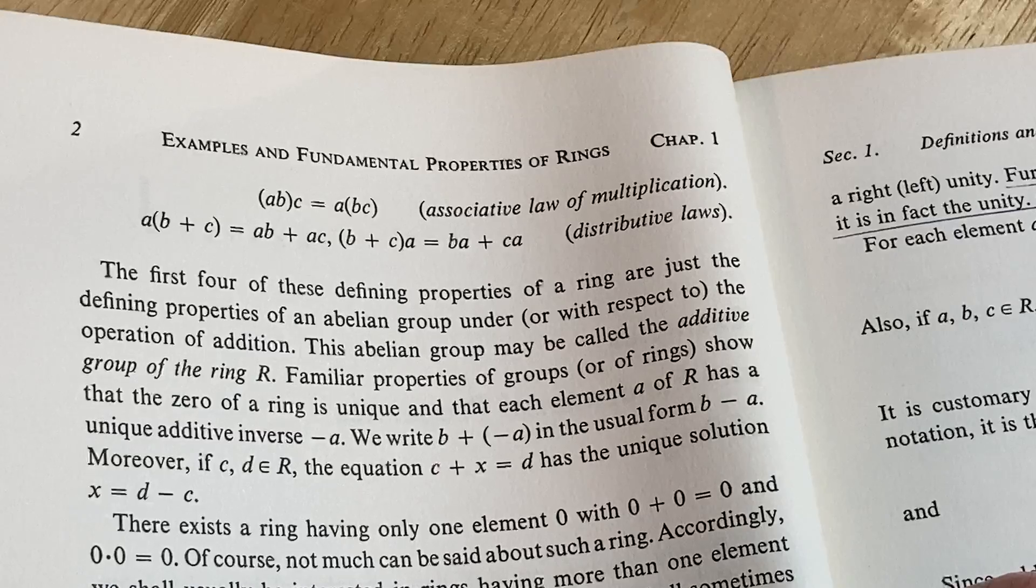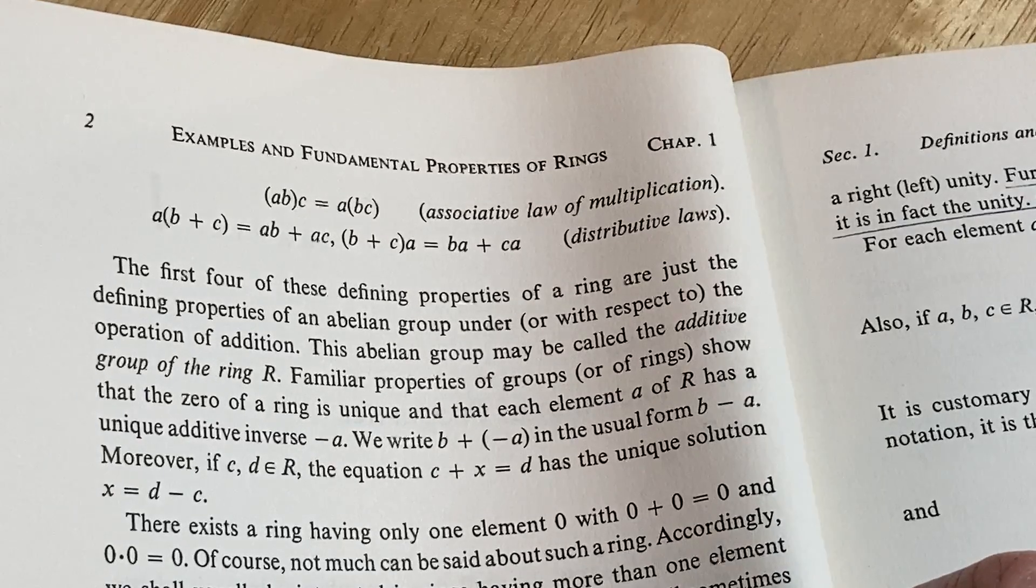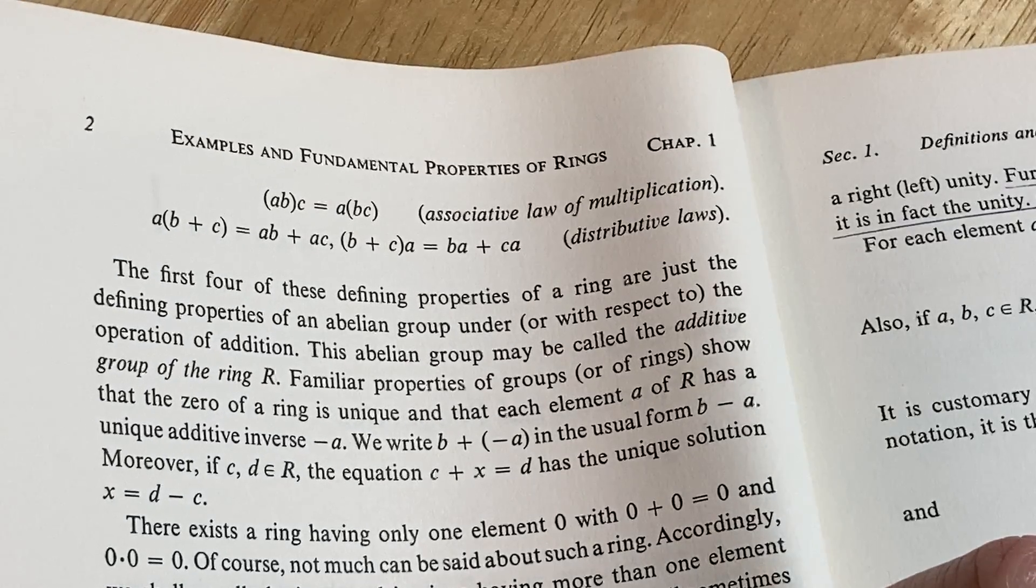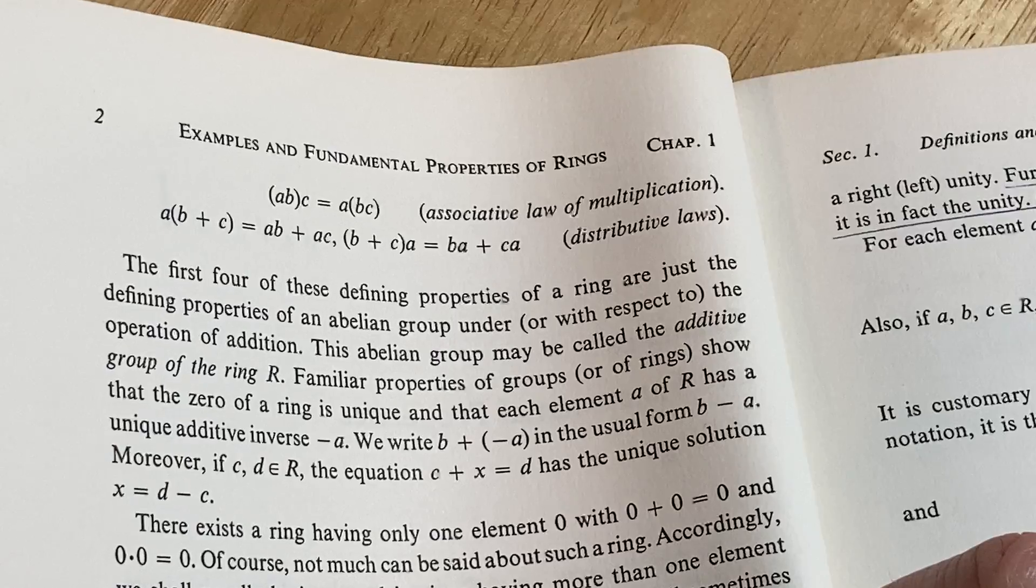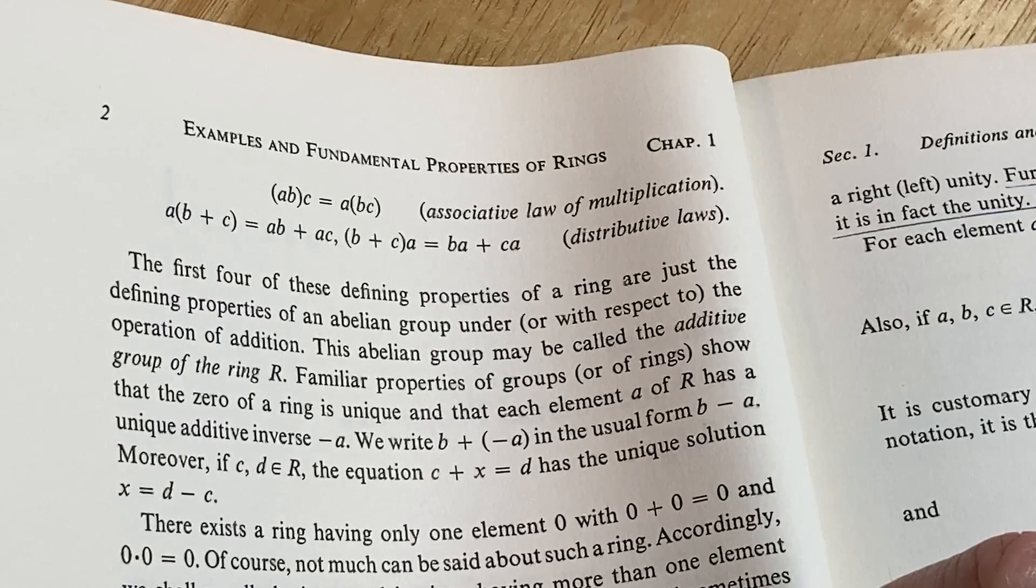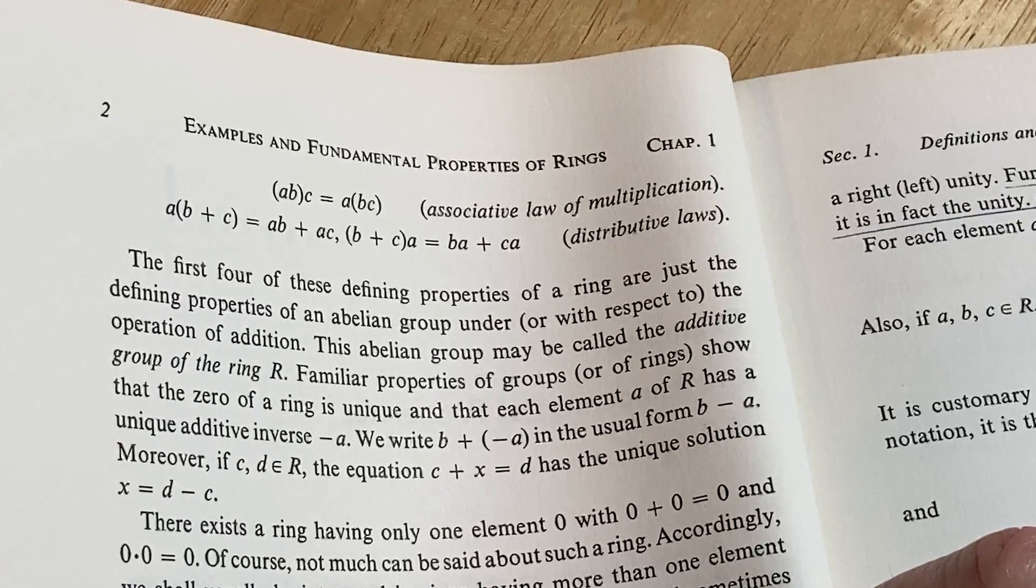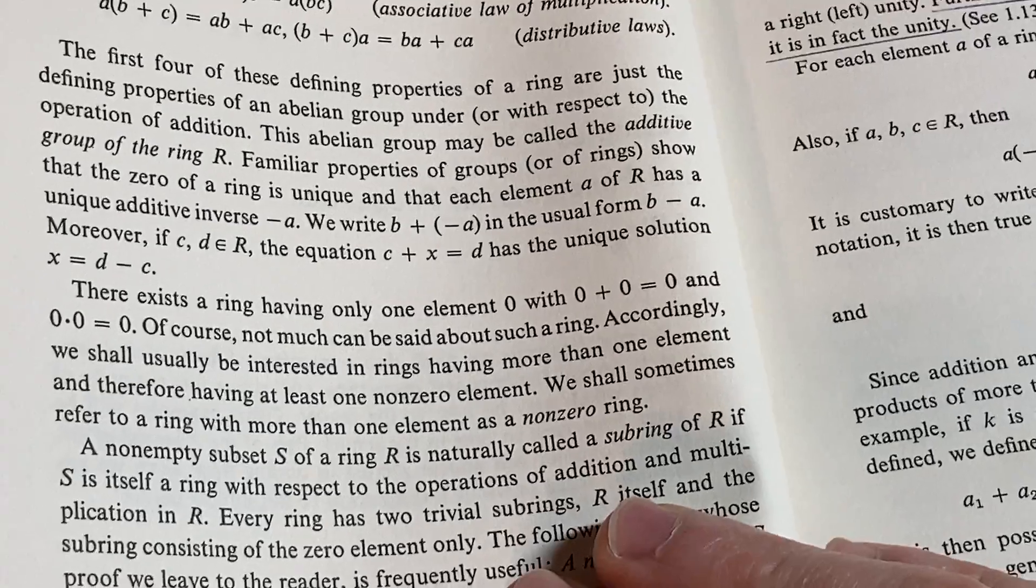Familiar properties of groups or of rings show that the zero of a ring is unique, yes, and that each element A of R has a unique additive inverse, yep. It's true.